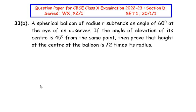Hello and welcome to my channel. In this video we are going to solve question 33B from the CBSC Class 10 examination 2022-23, Section D, where each question is of five marks. This question is from the Applications of Trigonometry chapter: a spherical balloon of radius r subtends an angle of 60 degrees at the eye of an observer. If the angle of elevation of its center is 45 degrees from the same point, then prove that the height of the center of the balloon is root two times its radius.